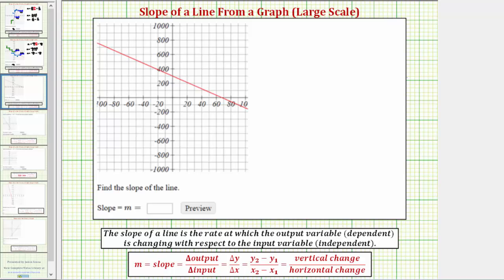In this example we're given the graph of a line and asked to find the slope of the line. The slope of a line is the rate at which the output variable, often y, is changing with respect to the input variable, often x.